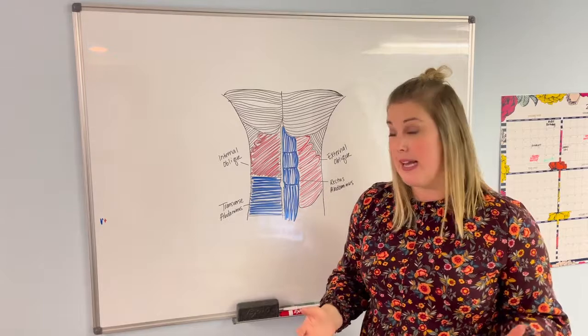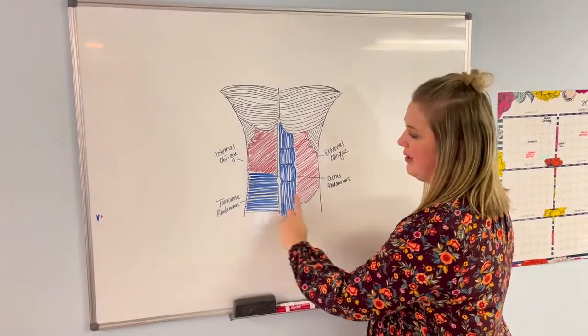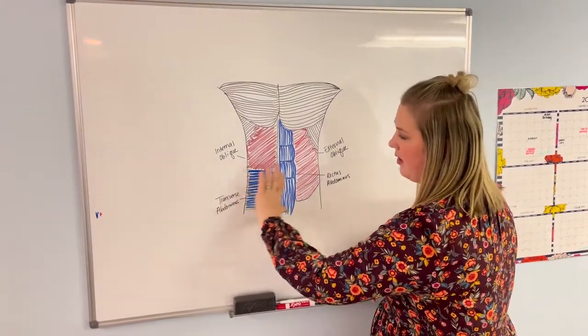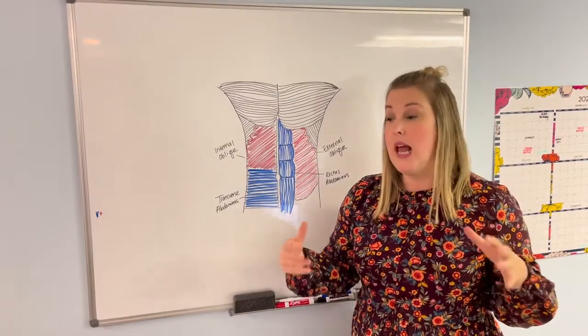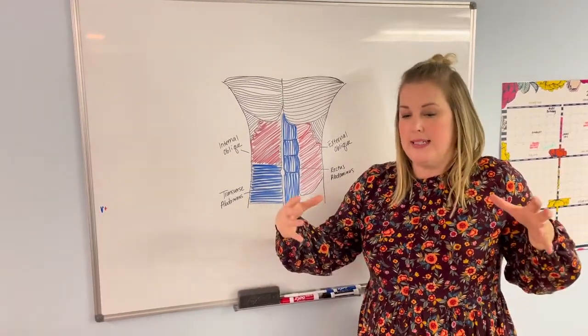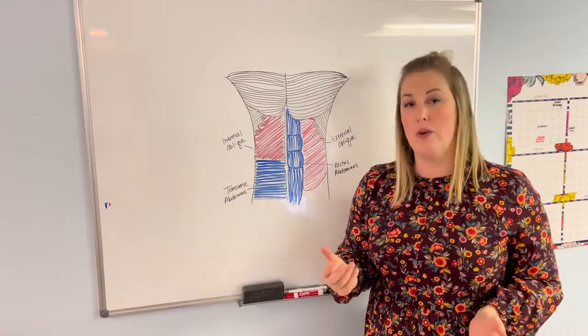Then the deepest layer is right here, the transverse abdominis. This is going to go all the way across horizontally like a corset, and it's going to cinch you in just like a corset would.